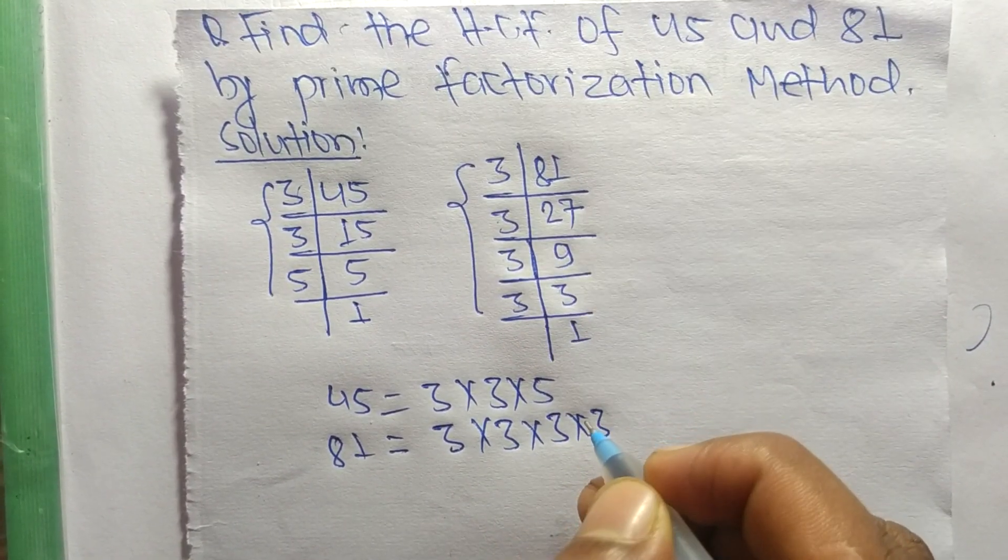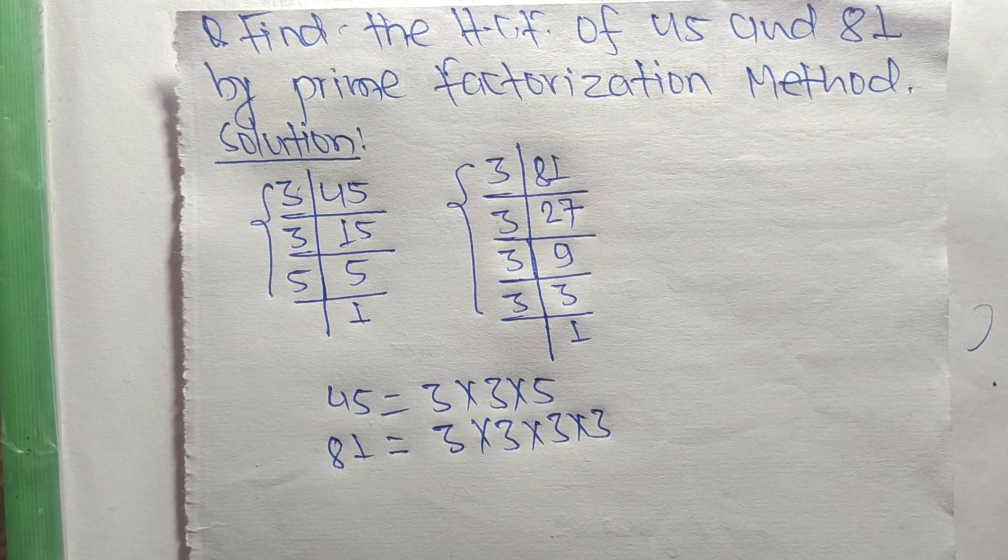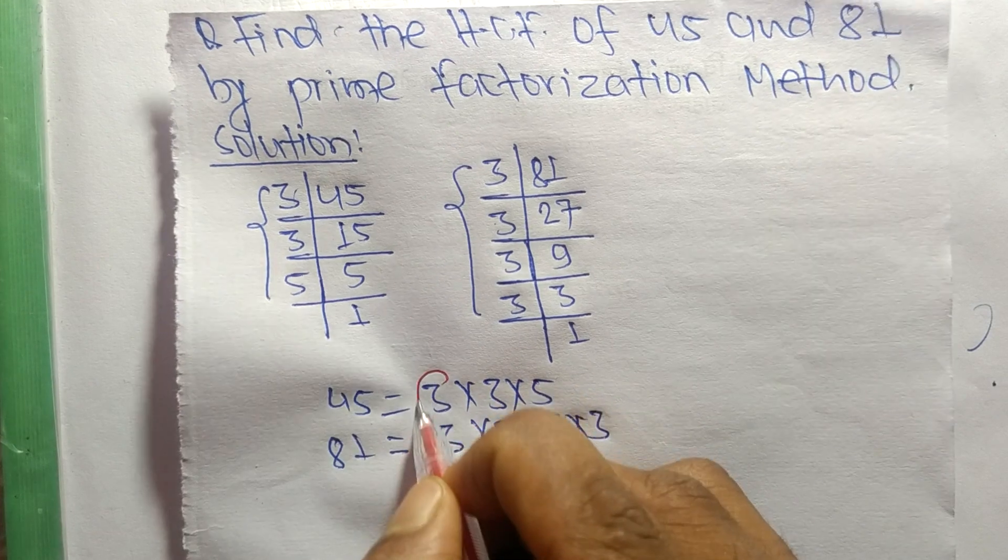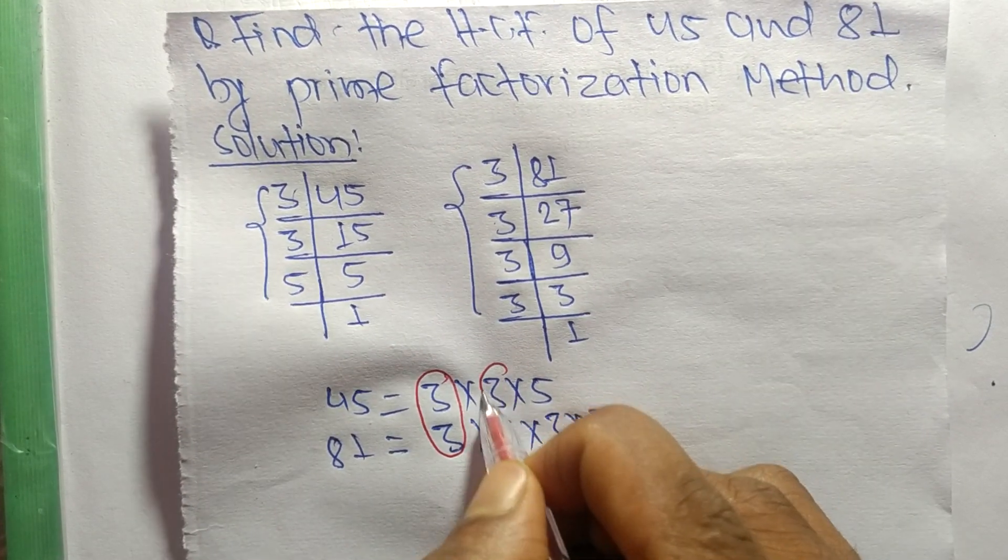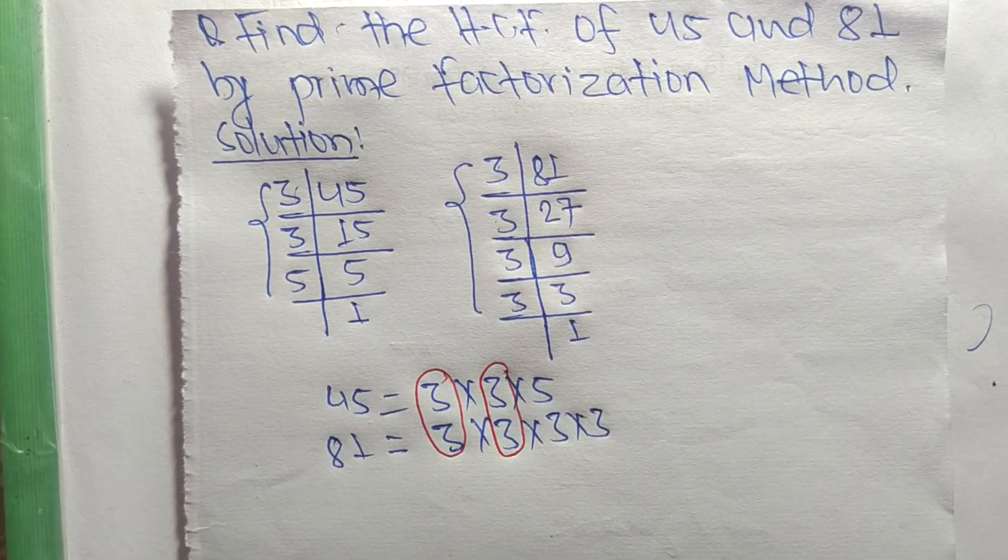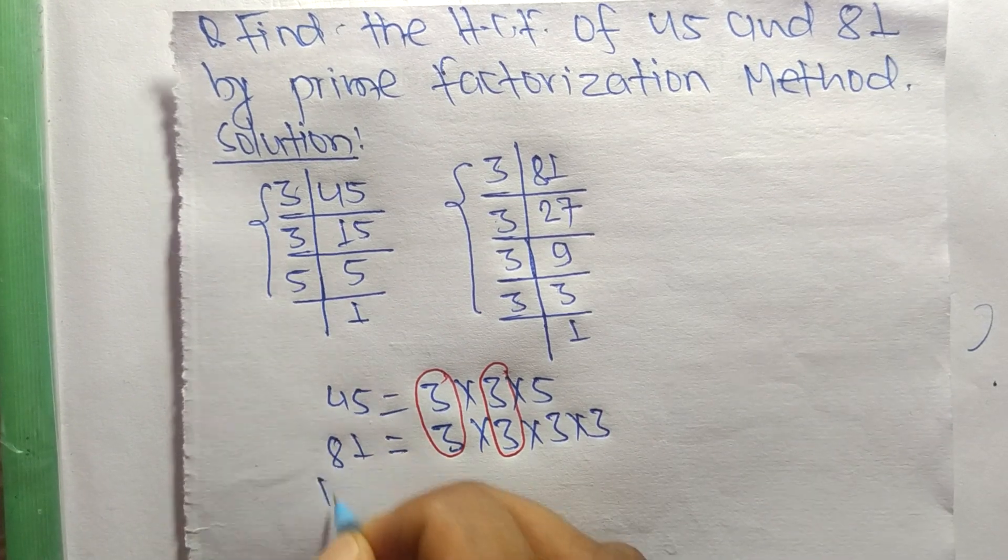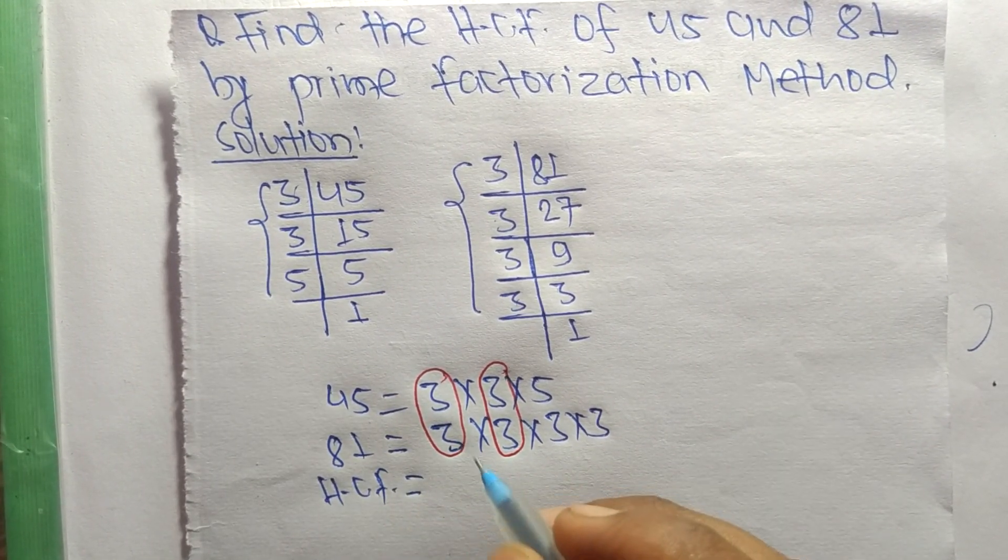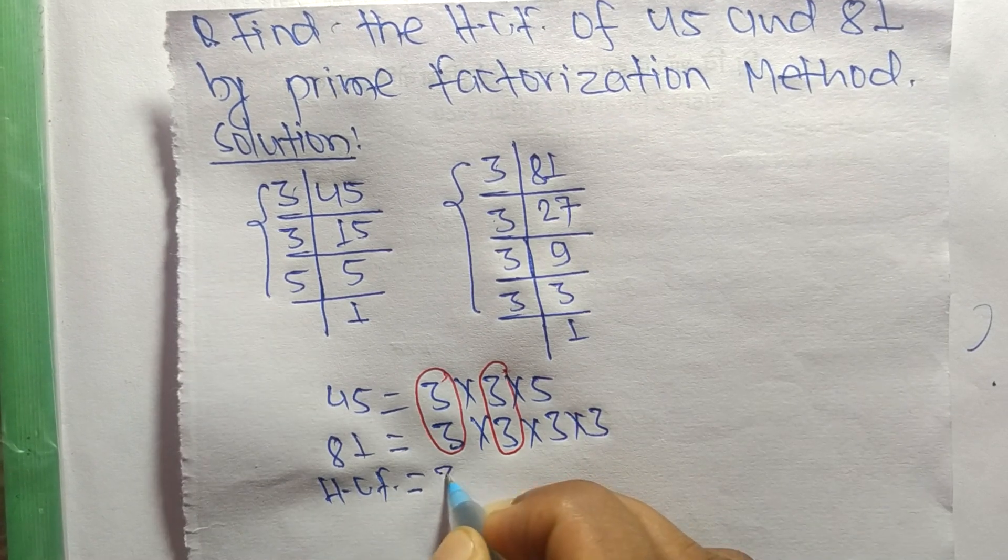Now we select the common factors in these prime factorizations. The first common one is 3, and the second one is also 3. So the HCF is equal to the product of common factors, which are 3 and 3.